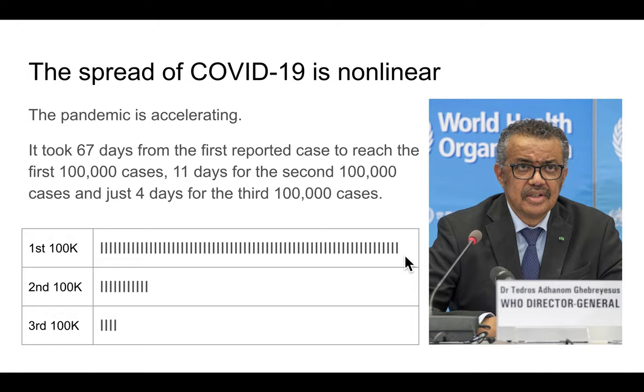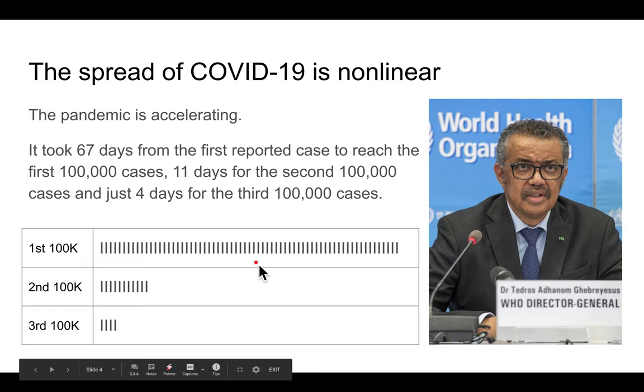Here's a quote from the World Health Organization director general, whose name I don't really know how to pronounce. He said the pandemic is accelerating. It took 67 days for the first reported case to reach the first 100,000, 11 days to reach the second 100,000, and just four days to reach the third 100,000. And here I've tried to illustrate that with 67, 11, and 4. Clearly, the growth rate is increasing over time.